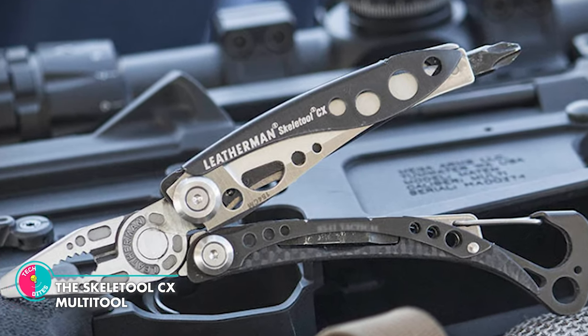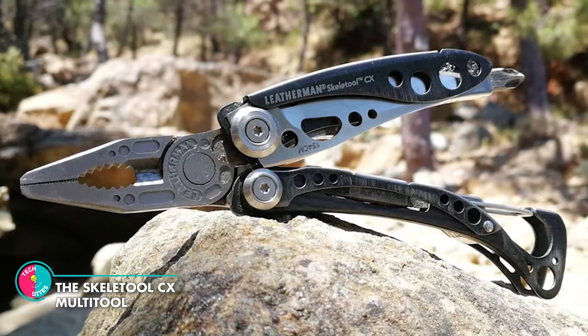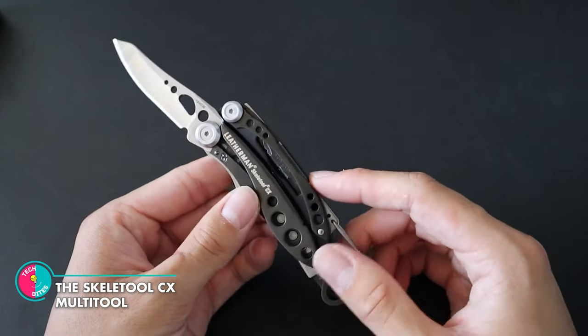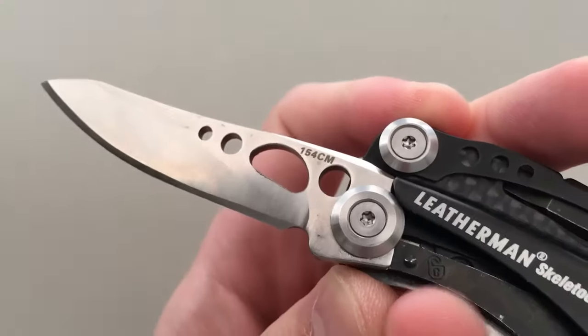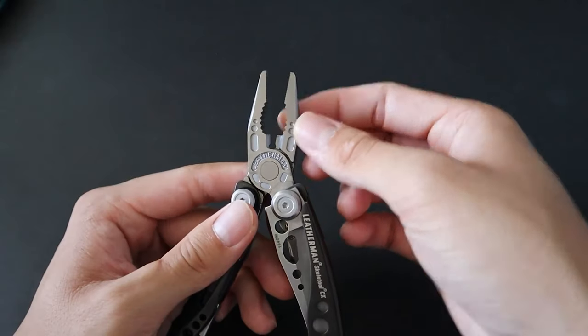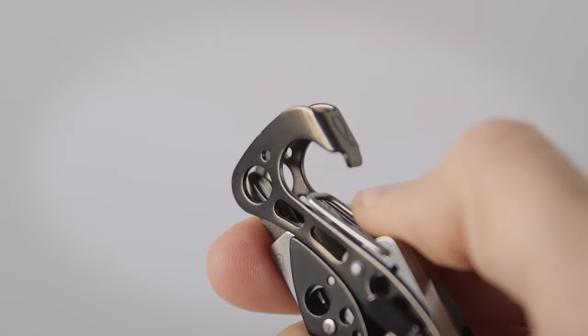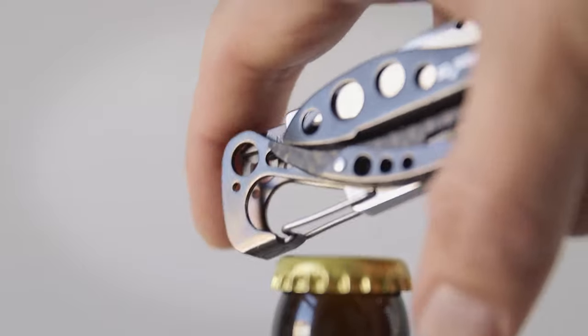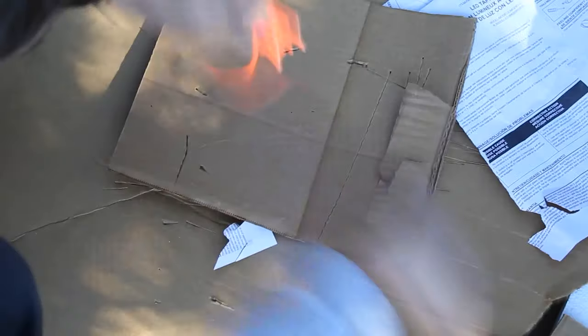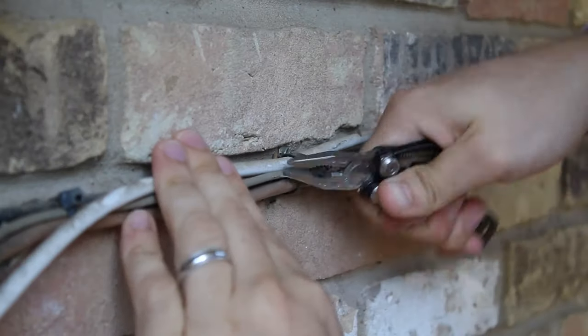The Skeletool CX Multi-Tool. It's a full-size, incredibly lightweight multi-tool, with a 154CM steel blade constructed of quality steel. All of the tools in the Skeletool CX, including those that aren't visible from the outside, can be opened and used with only one hand. With its blade, you can cut with confidence.